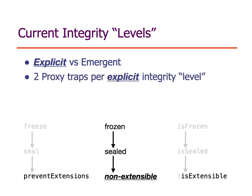A particular reason this distinction matters is that there are only proxy traps for the explicit integrity levels. There's a prevent-extensions trap and an is-extensible trap, because that's the fundamental state change the proxy needs to intervene in. There are no proxy traps corresponding to sealed or frozen.